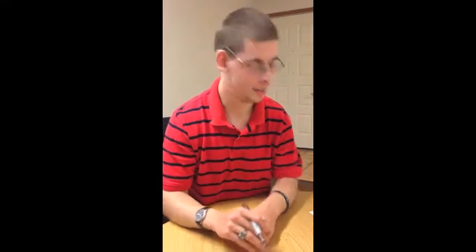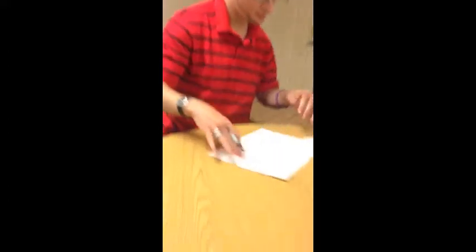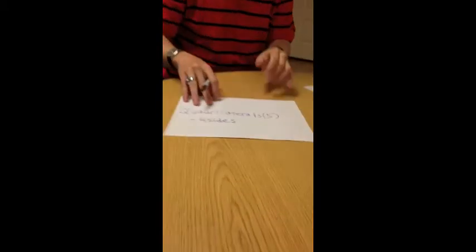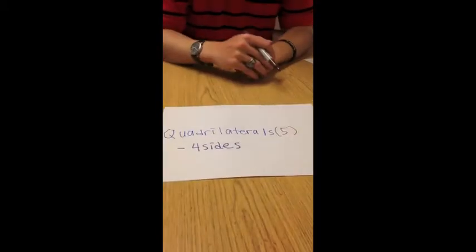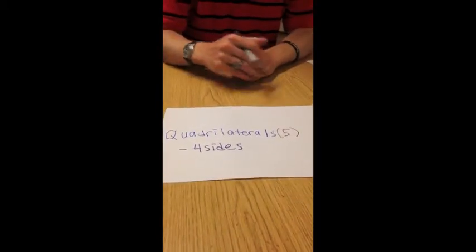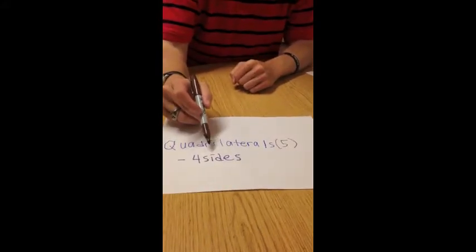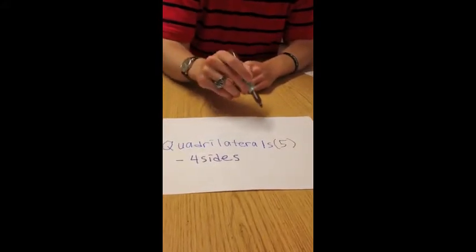Well, I am now going to show you, in this video, quadrilaterals. Quadrilaterals are polygons that have four sides, and I will be showing you five of them.